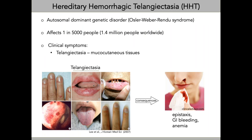HHT is an autosomal dominant genetic disorder that affects the vasculature, meaning if you're an HHT patient, you have a 50% chance of passing this to your offspring. It affects about one in 5,000 people, regardless of age, sex, or race. I'd like to point out that this prevalence is at the same rate or more prevalent than other more well-known diseases such as cystic fibrosis or muscular dystrophy.